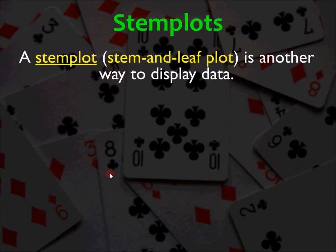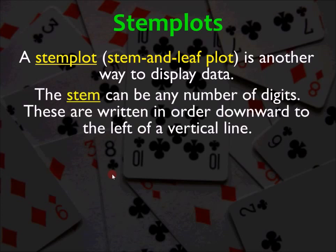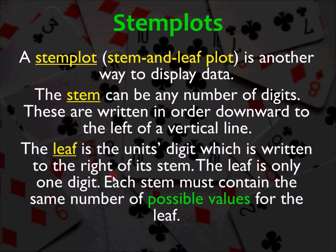Next, we're going to look at stem plots. Stem plots are another way to display single variable data. The stem can be any number of digits. It's usually 1, and we have a key that we can use to describe what the numbers mean. But the stem can be any number of digits. They're generally written in order downward to the left of a vertical line. The leaf is the unit digit, which is written to the right of its stem. The leaf has to be only one digit. So the stem can be any number of digits, but the leaf is always only one digit. Each leaf represents one value from the data set. Now, the thing with the stem and leaf plot is that each stem must contain the same number of possible values for the leaf. In other words, there have to be the same number of possible values for the leaf for each row.